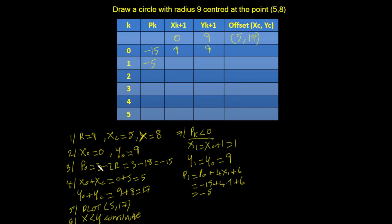Going back to add offsets: x = 1 + 5 = 6, y = 9 + 8 = 17. We plot this point, test — 1 is still less than 9 so we continue — and pk is still less than 0 so we go through the same process again.